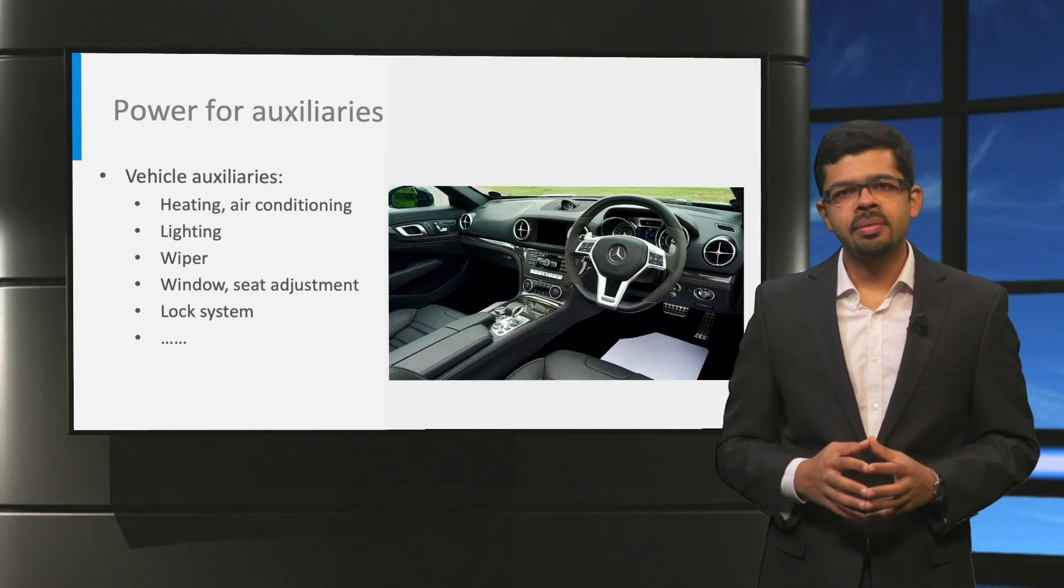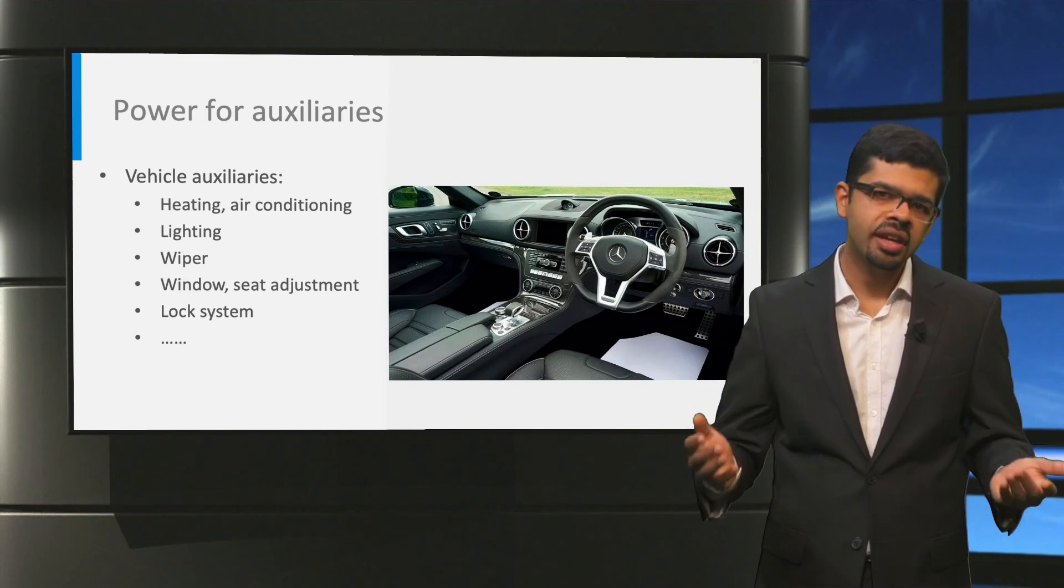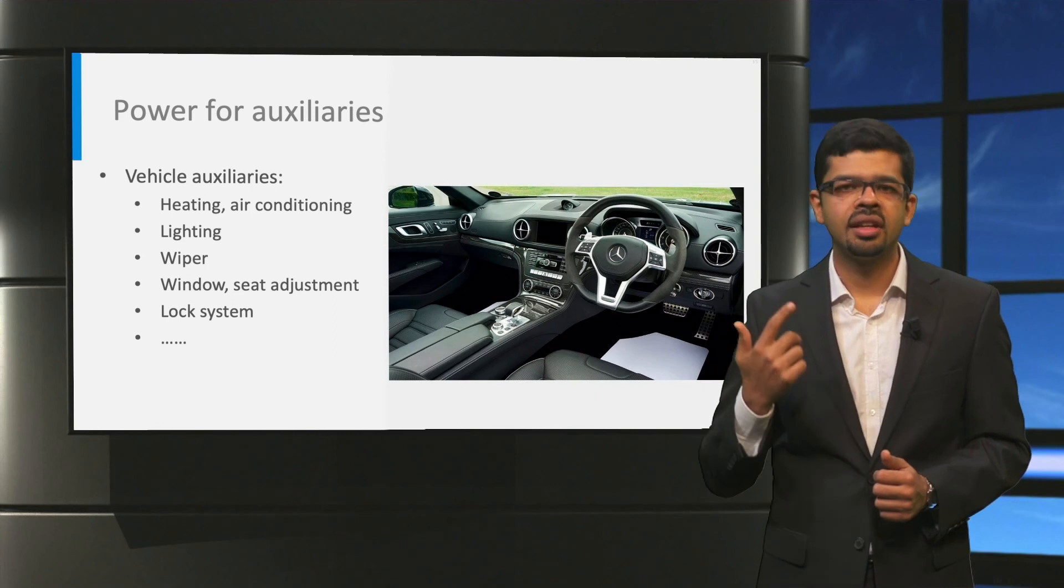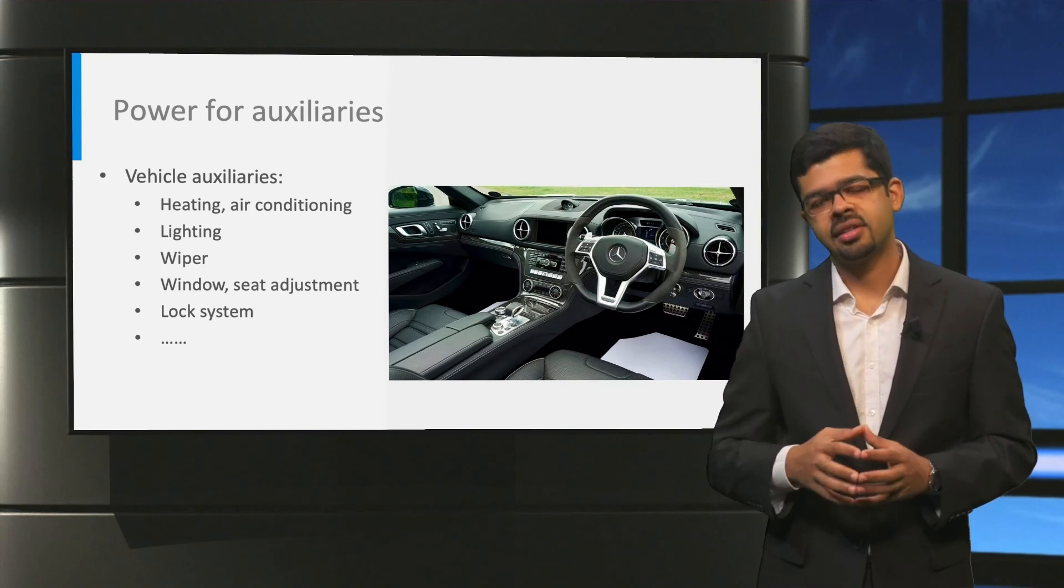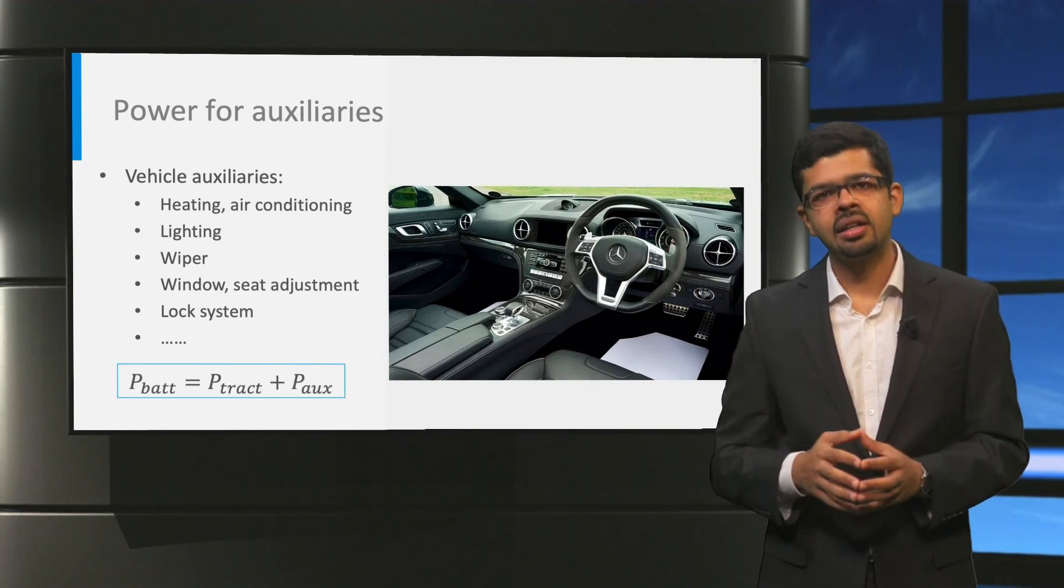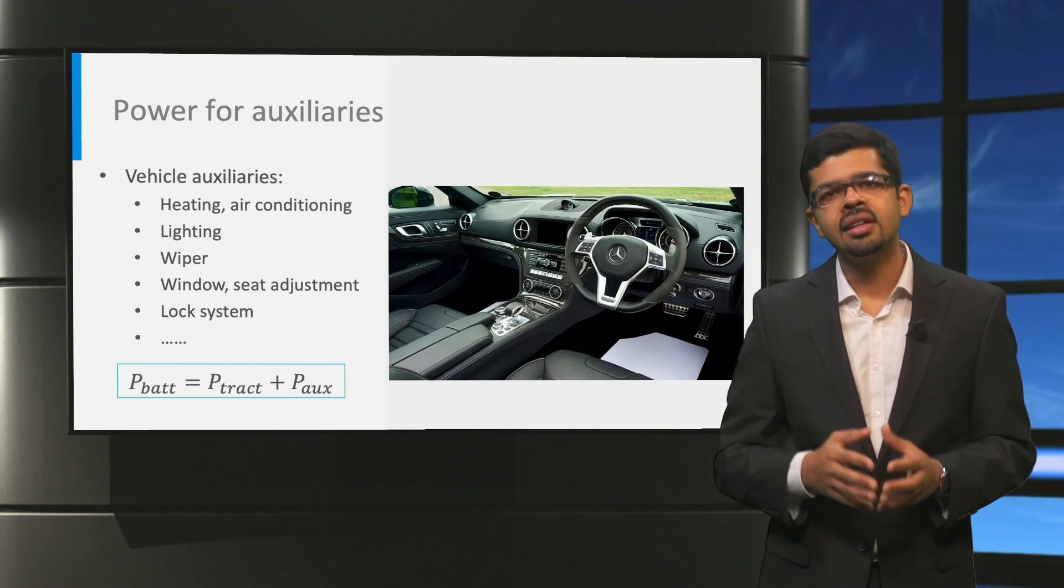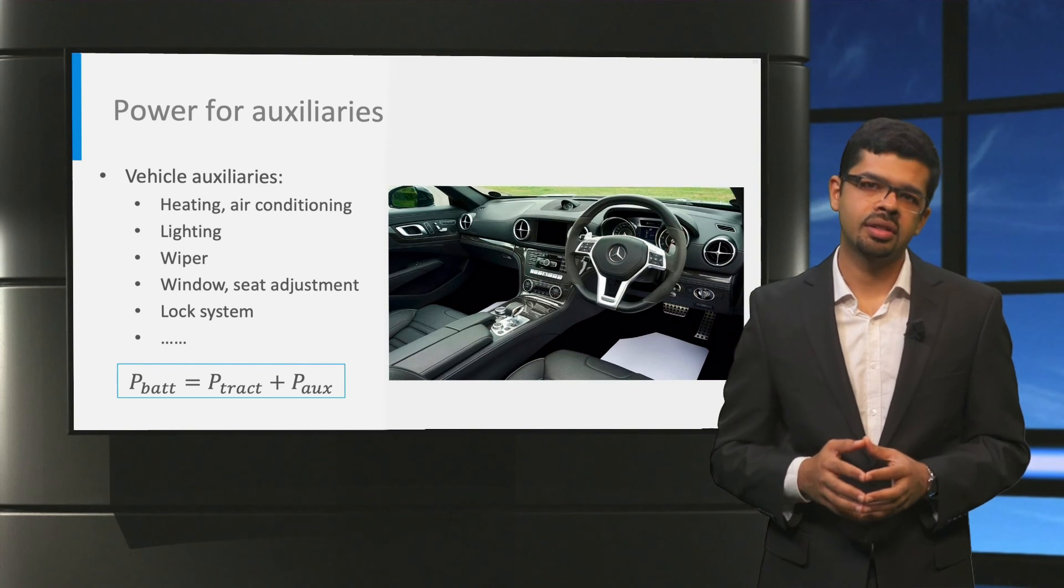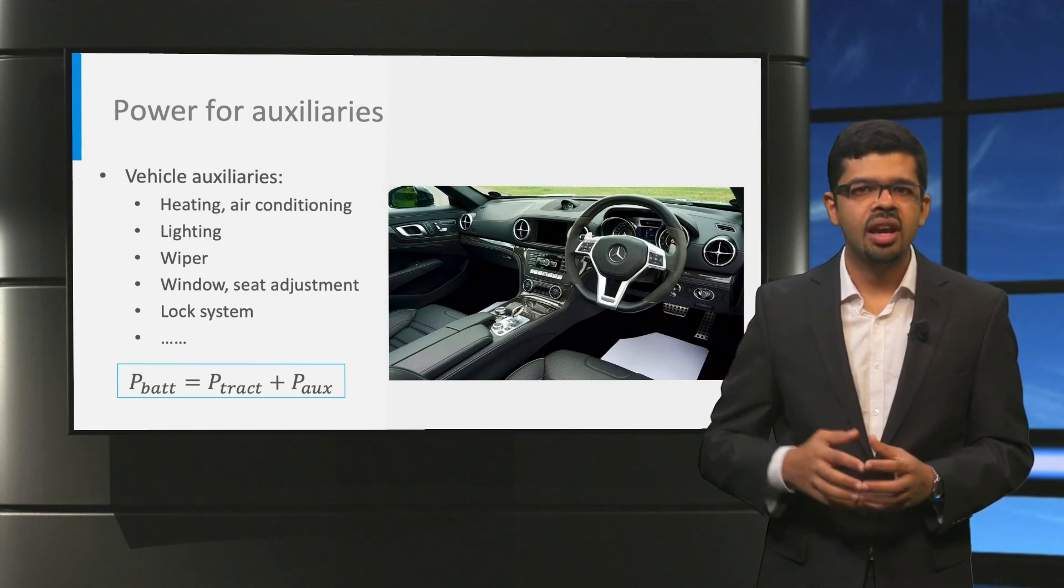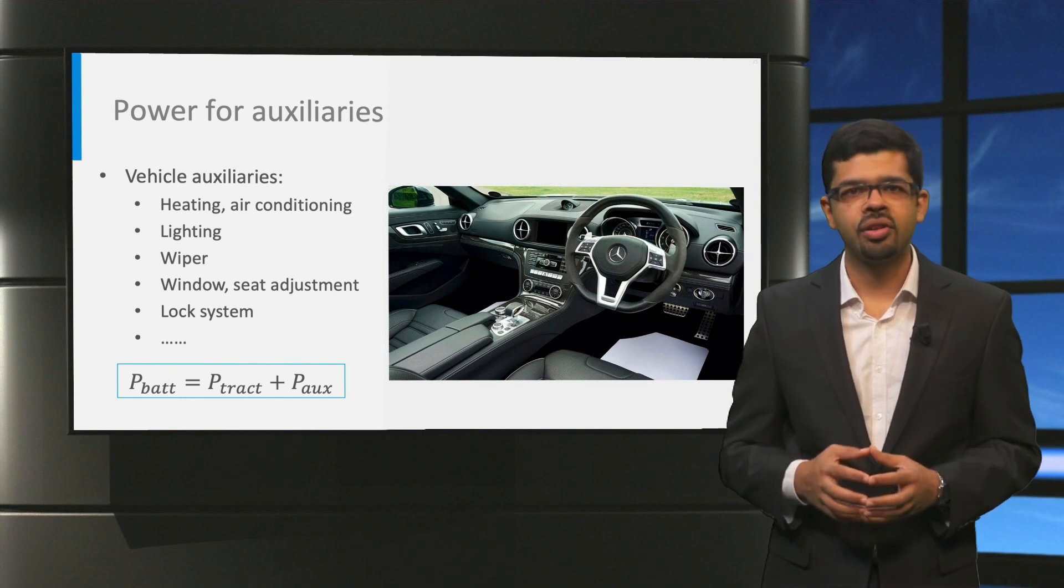Besides the traction force, the electric vehicle battery also provides the power for several vehicle auxiliaries. This can be the heating, the air conditioning, the lighting, the car wiper etc. Hence, the net power delivered by the traction battery Pbat is the sum of the traction power Ptract that we saw earlier and the auxiliary power Paux. At times, it can be that the auxiliary power for heating, ventilation or air conditioning is quite significant when compared to the power required for driving.